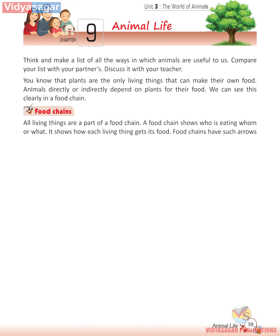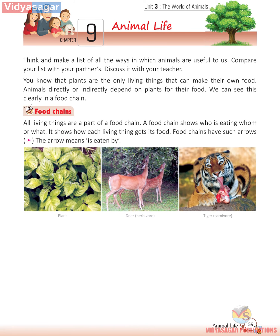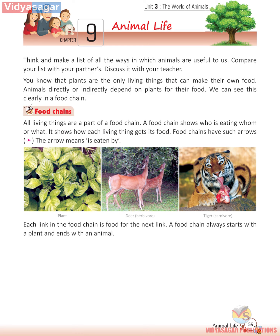Food chains have arrows. The arrow means 'is eaten by.' Each link in the food chain is food for the next link. A food chain always starts with a plant and ends with an animal.